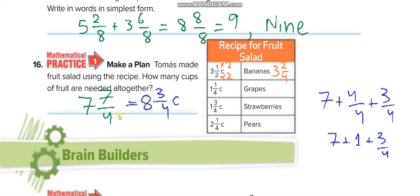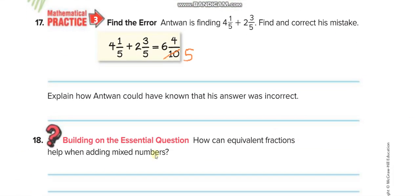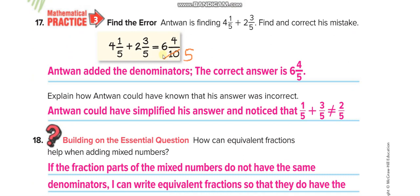For the next problem, three fractions share the same denominator. Make the fourth one the same by multiplying by 2, giving 3 and 2/4. Add all of them to get 7 and 7/4. Simplify: how many 4s fit in 7? One — so 7 becomes 8, remainder 3, giving 8 and 3/4. Also, remember the common mistake: you do not add denominators — the denominator stays the same.